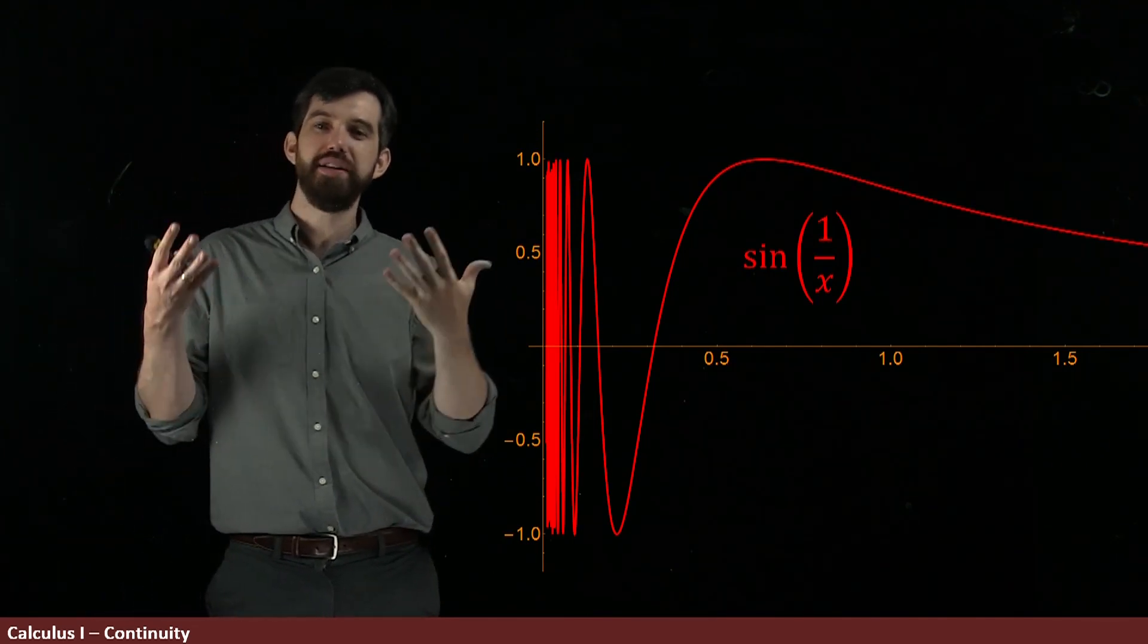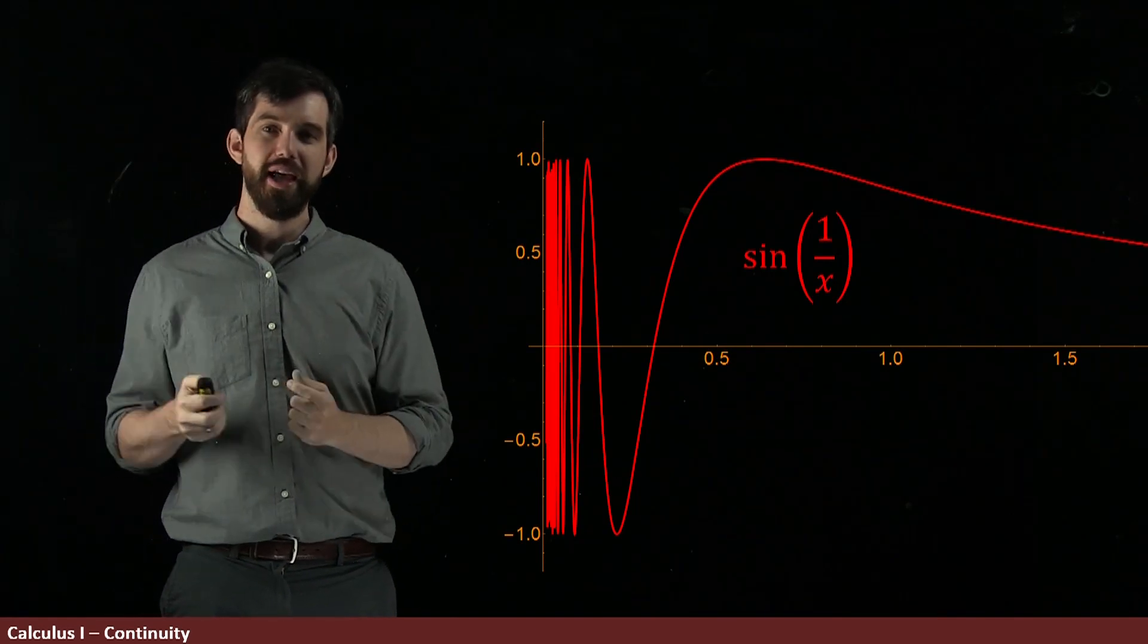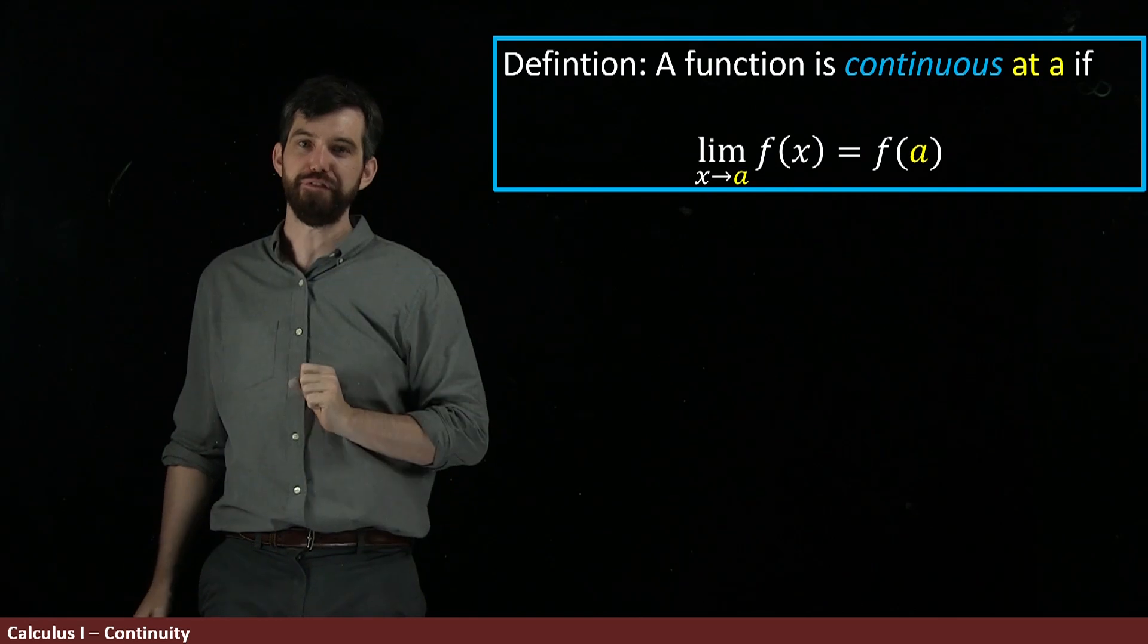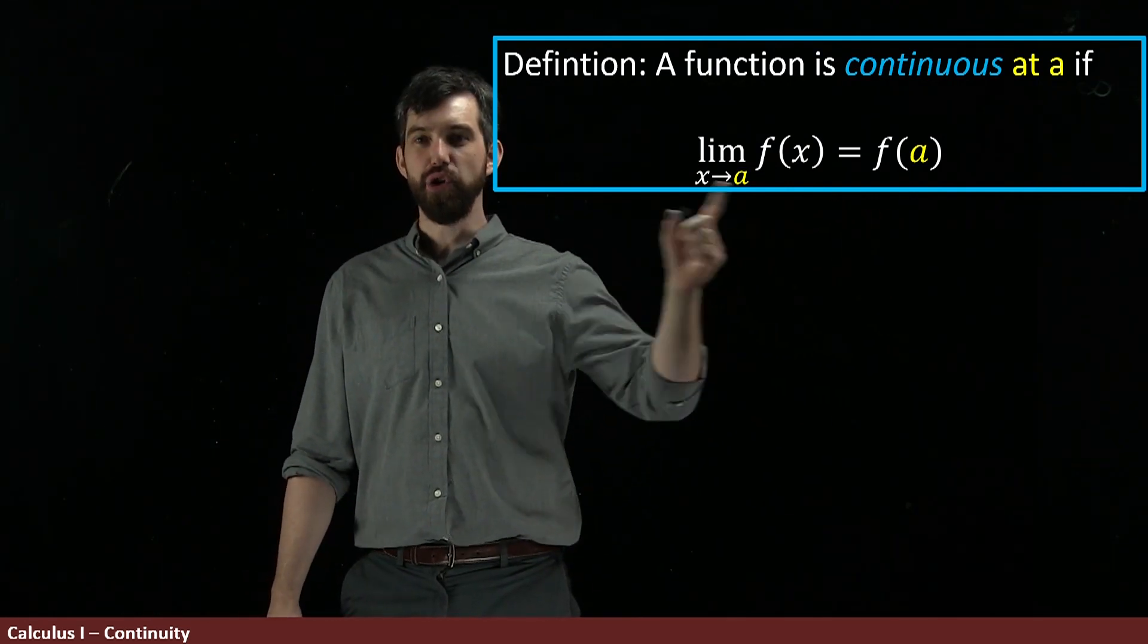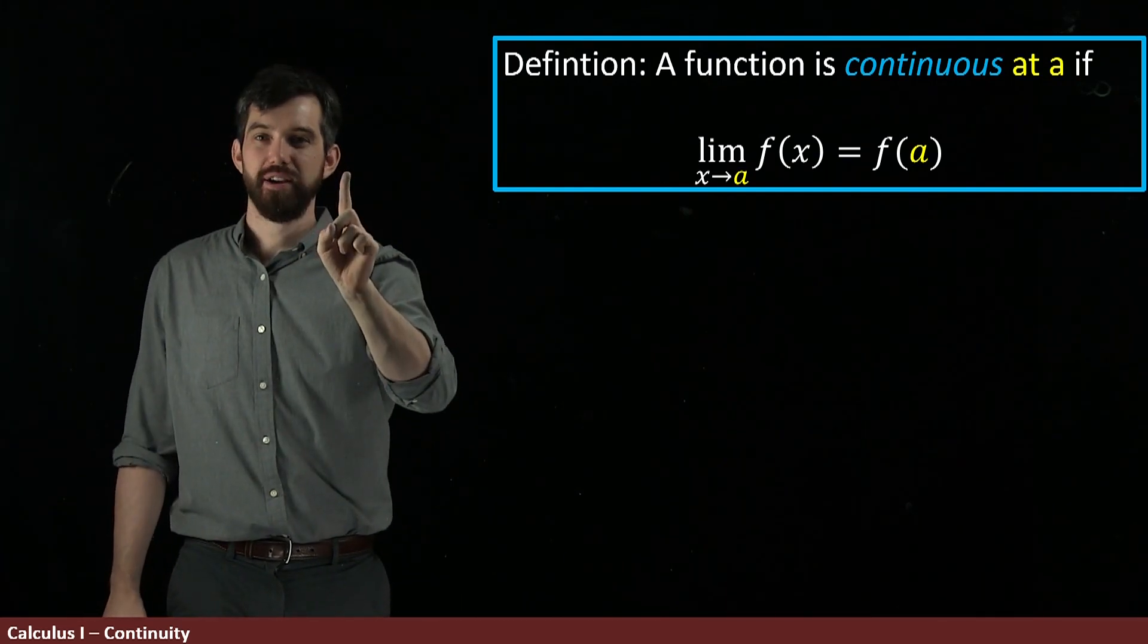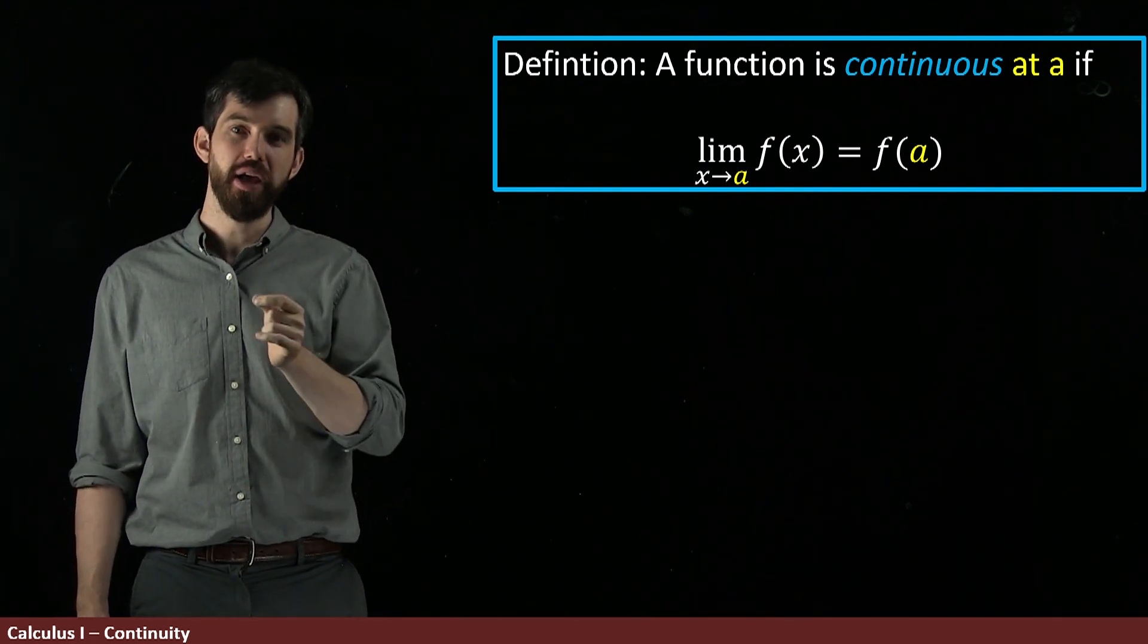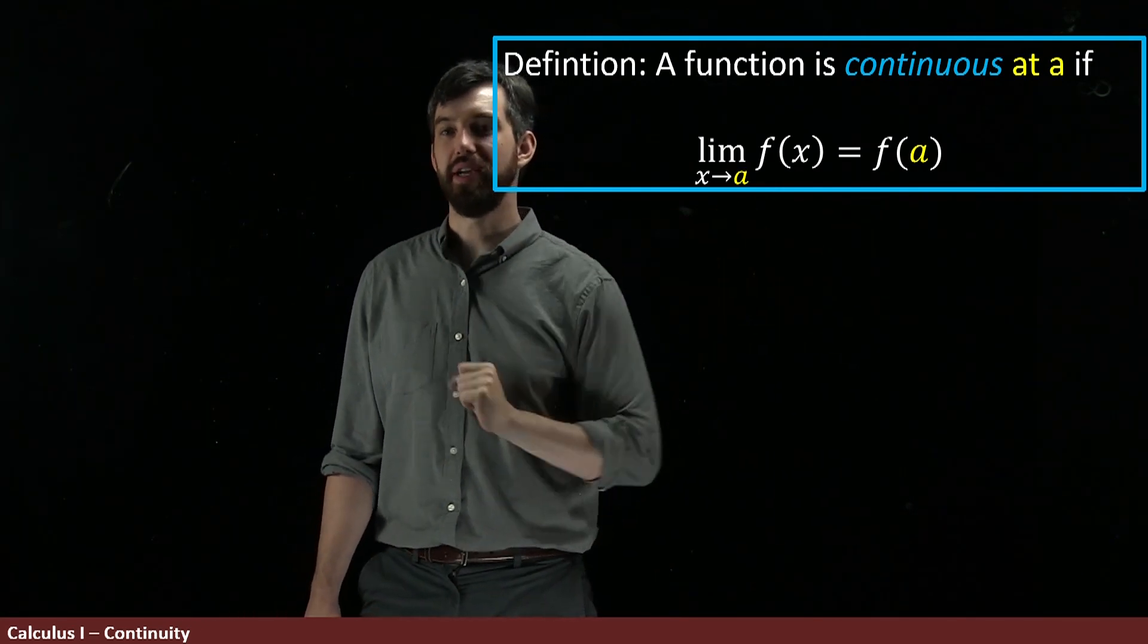So the notion I'm trying to illustrate to you is something called continuity. And so we are going to say that a function is continuous if the limit and the function value are the same. Or more precisely, we're going to say it's continuous at a point a. Continuity is a local property, it's something that happens at some particular point, if the limit as we get close to it is just the same thing as the function value.